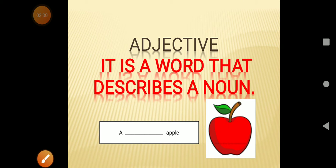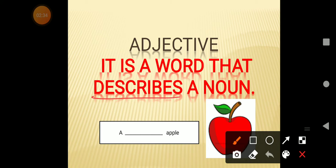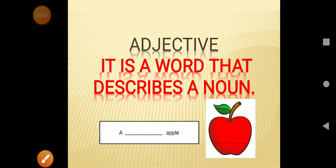So what is an adjective? An adjective is a word that describes a noun. What you have to remember? The word that describes a noun, that is an adjective. An adjective is a word that describes a noun.